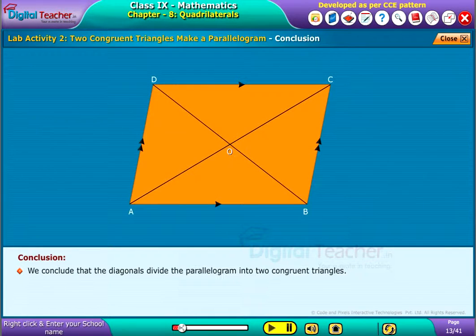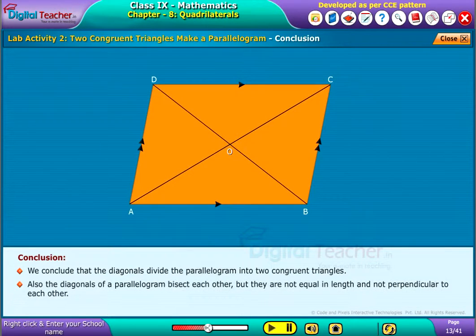We conclude that the diagonals divide the parallelogram into two congruent triangles. Also, the diagonals of a parallelogram bisect each other, but they are not equal in length and not perpendicular to each other.